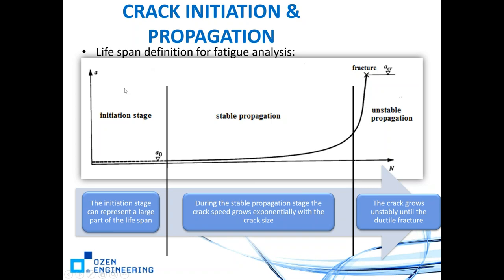If we plot crack length on the vertical axis and number of cycles to failure on the horizontal axis, we see an initiation stage where there is no observable crack. At one point there may be an observable crack — meaning the crack may initiate from an already existing crack. A sub 0 always represents the initial crack size. Fracture mechanics always starts with an initial crack size A sub 0.